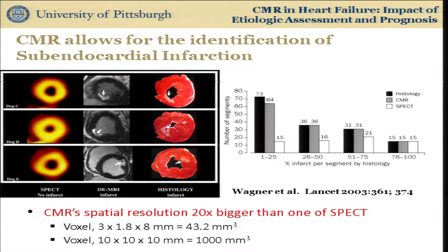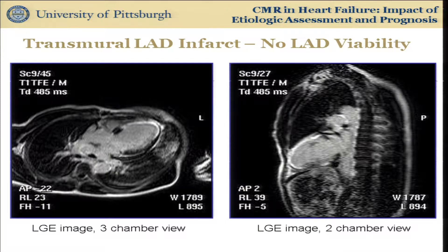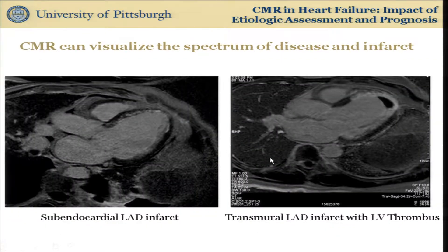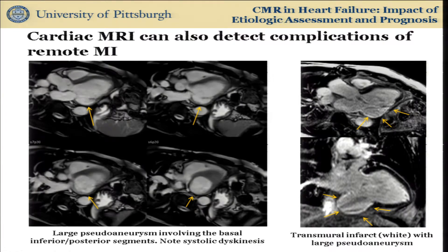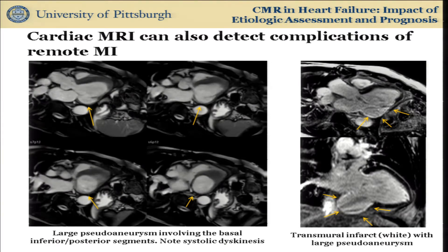This has been shown in animal and clinical studies: CMR's spatial resolution is 20 times better than SPECT for recognizing small subendocardial infarcts, and the transmurality of infarct extent determines recovery of function. Examples include: a transmural LAD infarct with no viability — pretty much dead muscle; a subendocardial infarct with some viability in the mid-inferoseptum; a patient with large transmural infarct and apical clot; and a basal pseudoaneurysm — this patient presented with abdominal pain, which was actually compression of her stomach by the expanding pseudoaneurysm.